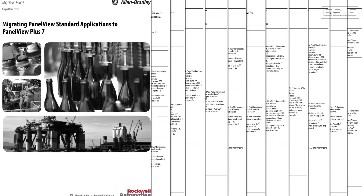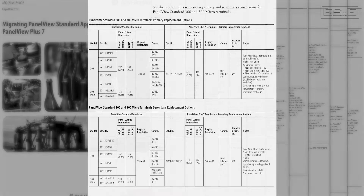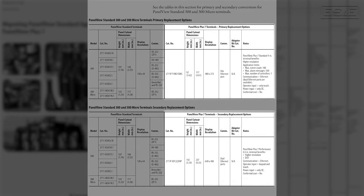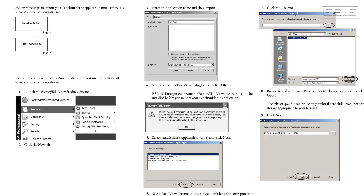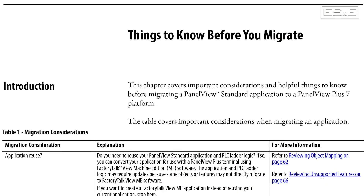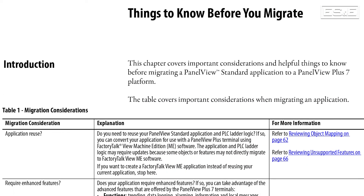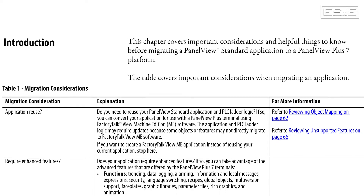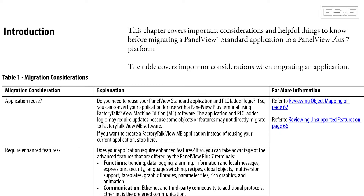Before we jump into doing a conversion, I'd like to highlight the migration guide. This publication shows you tables with Panel View Standard part numbers and then gives you replacement Panel View Plus 7 part numbers. It also gives you step-by-step instructions on how to import and convert your application. Make sure you read through chapter one to understand what the conversion can and cannot do with your Panel Builder 32 application.